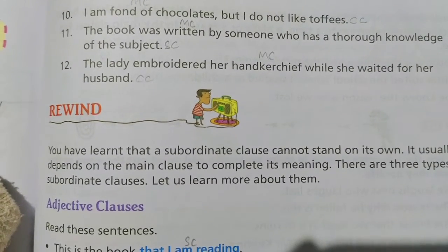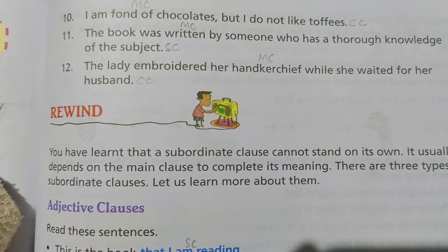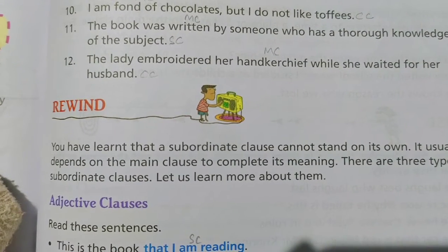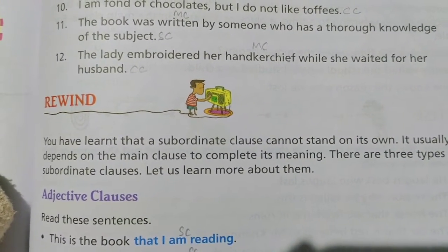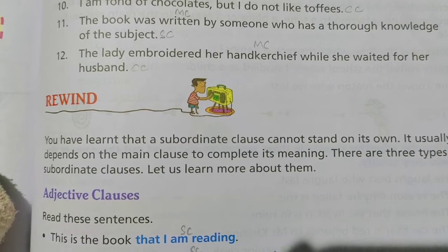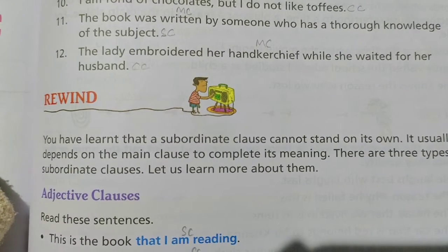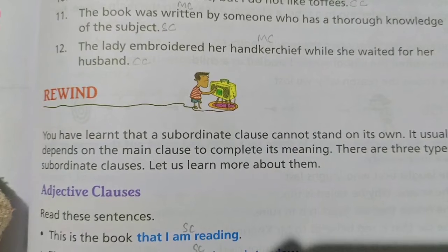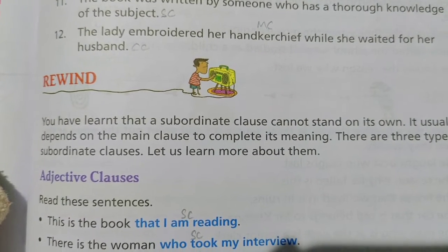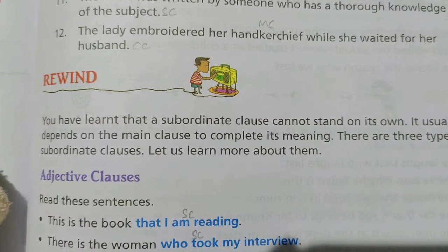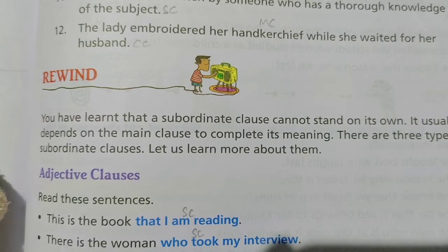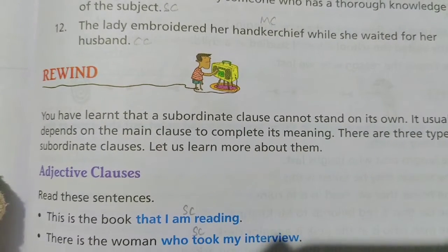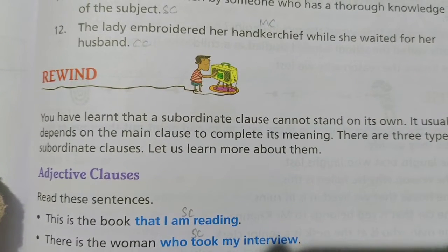Tenth: 'I am fond of chocolates' is main clause; 'I do not like toffees' is coordinate clause. Eleventh: 'The book was written by someone' is main clause; 'who has a thorough knowledge of the subject' is subordinate clause. Twelfth: 'The lady embroidered her handkerchief' is main clause; 'she waited for her husband' is coordinate clause.